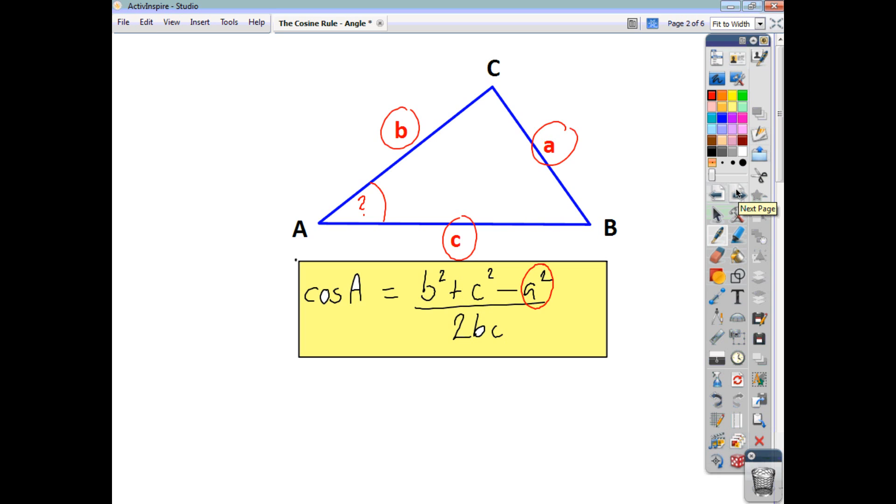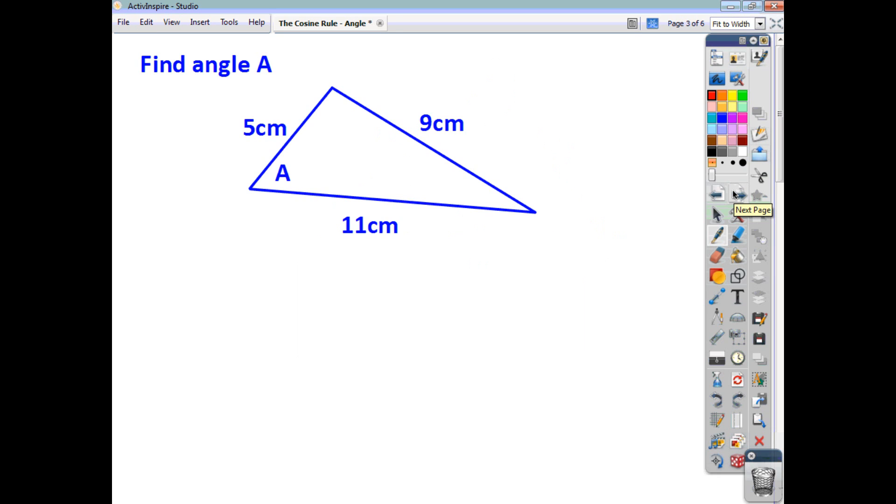If we have a look at this triangle here, we're asked to find angle A. Let's start off by saying what cos A is equal to. Cos A is equal to 5 squared plus 11 squared minus 9 squared. Notice that the 9 here is opposite our angle. And you're dividing then by 2BC, so 2 times 5 times 11.